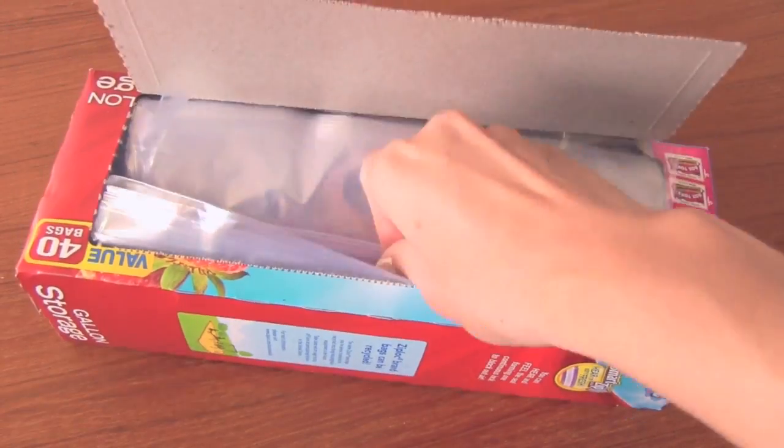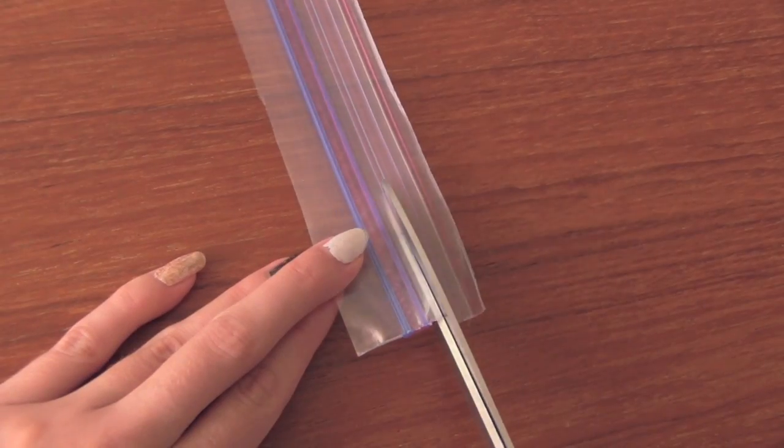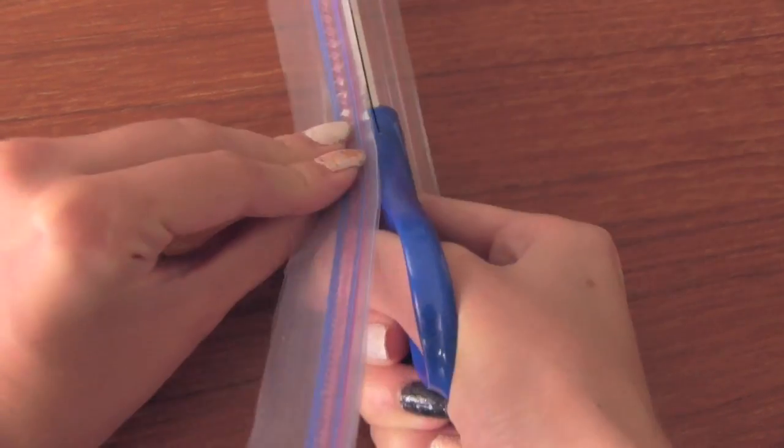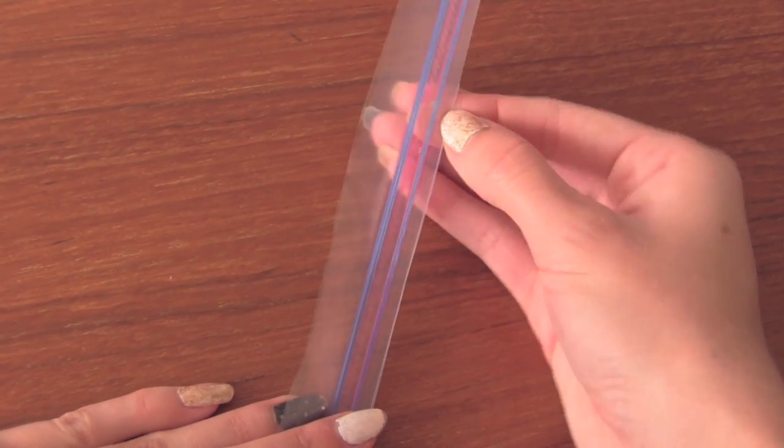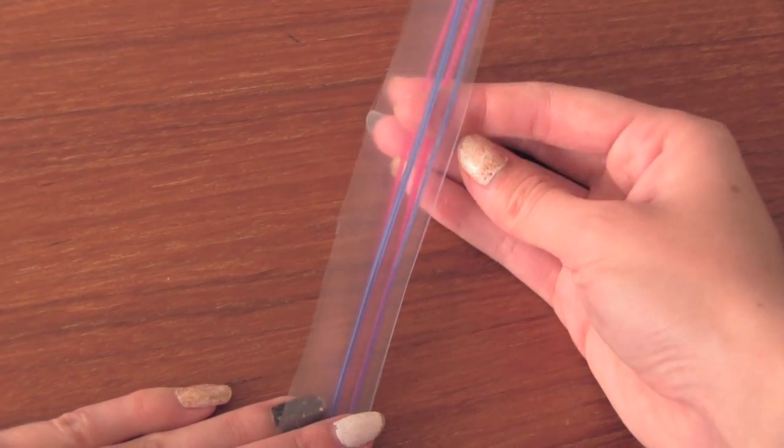You're going to start by grabbing a ziplock bag and you're going to trim the zipper off of that. I'm also trimming off the little pink and blue ridges on top of the zipper as well. All you want to keep is the actual ziplock part and make sure that there's a little bit of plastic on each side so you can attach tape to that.